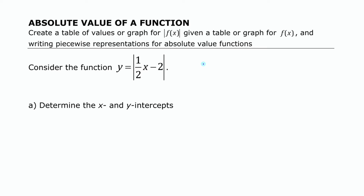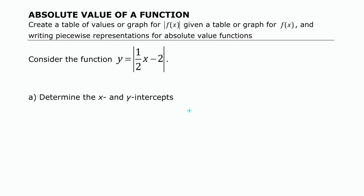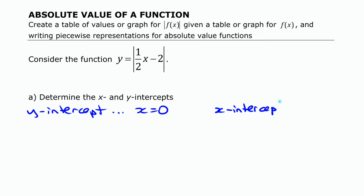To start with, the first thing we're going to do is find the x and y intercepts of that function. You do that exactly the same way as you would with any other function. If you want the y-intercept, you put in x equals 0, and if you want the x-intercept, you put in y equals 0.